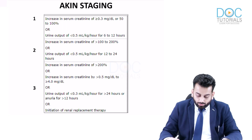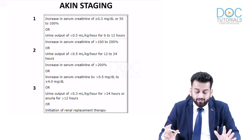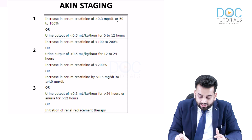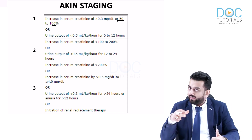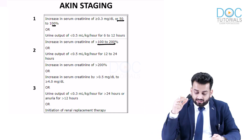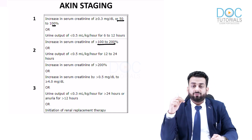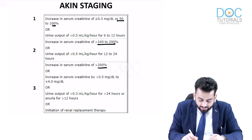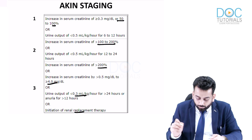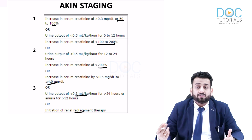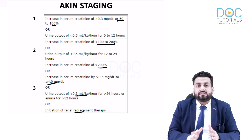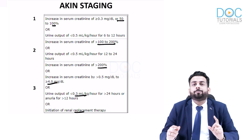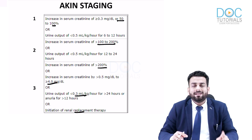AKIN staging of AKI is almost identical to KDIGO staging. Stage 1 is 1.5 to 1.9 times (50–99% increase); Stage 2 is 2 to 2.9 times (100–200%); Stage 3 is more than 200% (three times baseline), serum creatinine more than 4, initiation of RRT, or urine output less than 0.3 ml/kg/hour for more than 24 hours or anuria more than twelve hours. The diagnostic criteria differed in one point — seven days vs. 48 hours — but the staging is effectively the same.